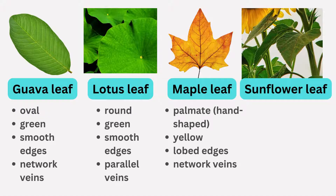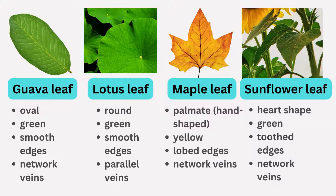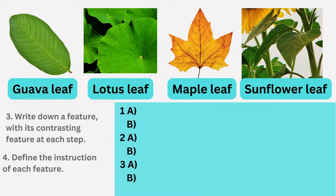The maple leaf has a distinctive palmate shape, yellow coloration, lobed edges, and an interwoven network of veins. The sunflower leaf displays a heart shape, rich green color, toothed edges, and a network of veins. Now we can combine steps three and four by listing two contrasting features at each step and defining an instruction for each choice simultaneously.